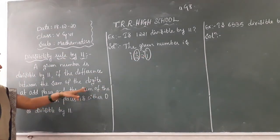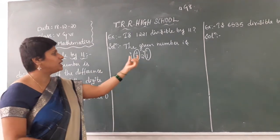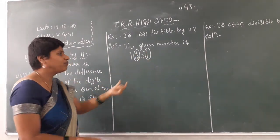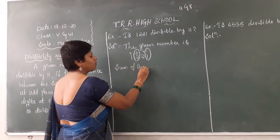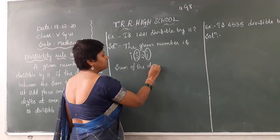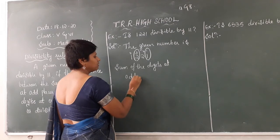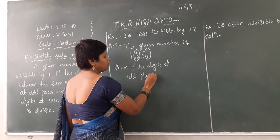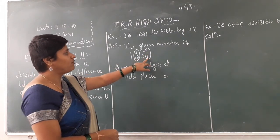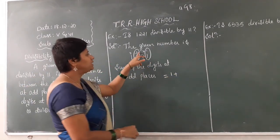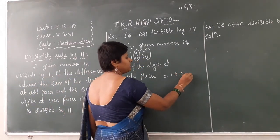Now what do you have to find? The sum of the digits at odd places. Whatever values are there in the odd places you have to add up. In position 1 there is a 1, and in odd position 3 there is a 2. So you add up: 1 plus 2 equals 3.